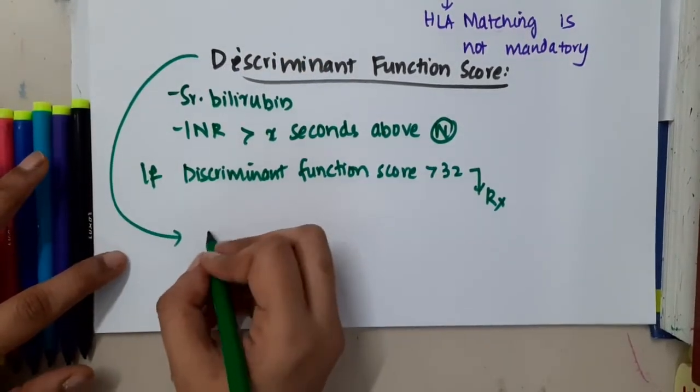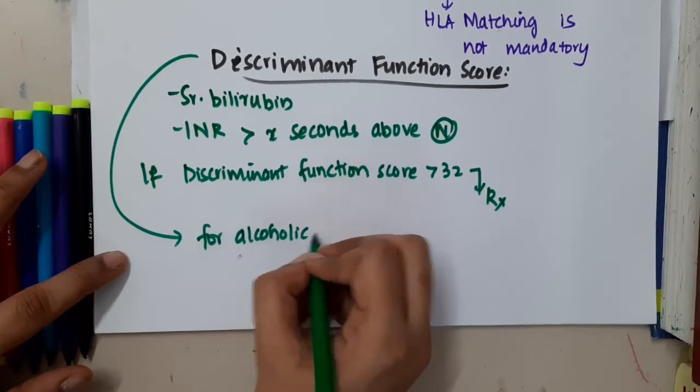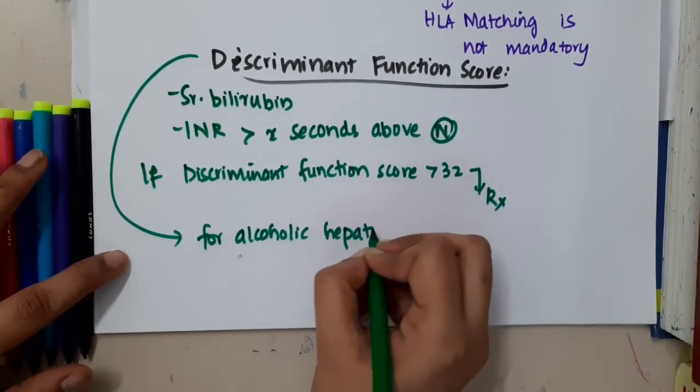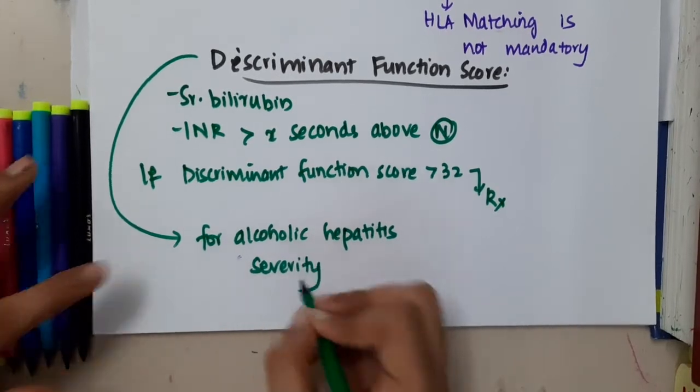This discriminant function score is for knowing the alcoholic hepatitis severity. It is to know the alcoholic hepatitis severity.